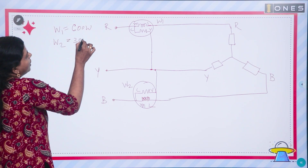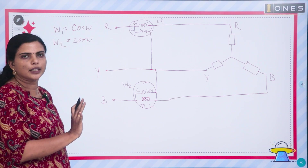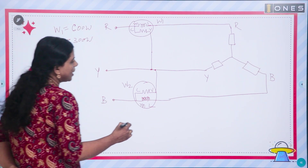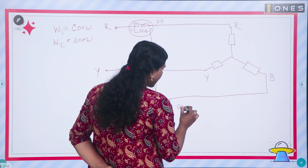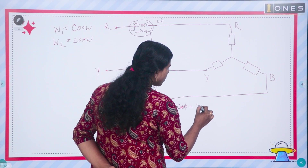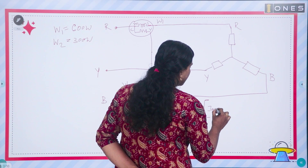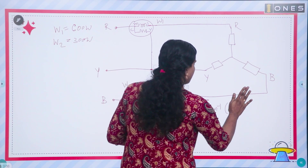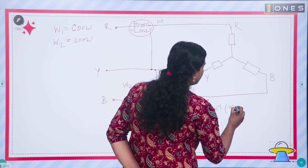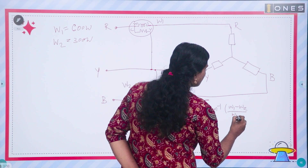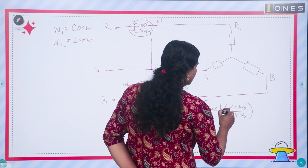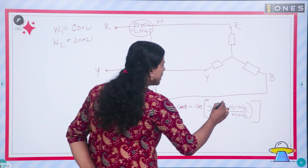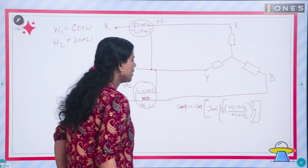For the power factor, there is a formula: cos phi is equal to cos of tan inverse of root 3 into (W1 minus W2) divided by (W1 plus W2).